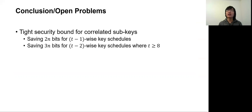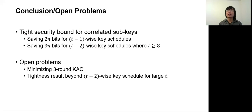In conclusion, we study the security of KAC with independent round permutations and correlated subkeys. We show that (t-1)-wise key schedules can save 2n bits in the master key, and (t-2)-wise key schedules save 3n bits when the round count t is at least 8. However, many open problems remain: one is to minimize three-round KAC, since our (t-2)-wise result does not apply when t equals 3; another is whether tightness results can be extended beyond (t-2)-wise key schedules for general t. For more details, please check out our paper. Thank you.